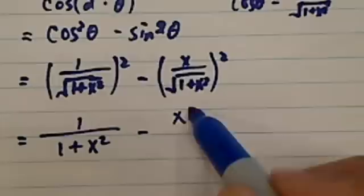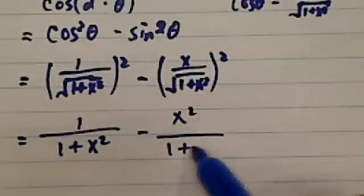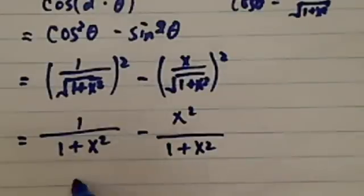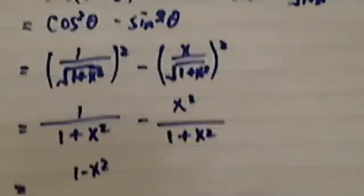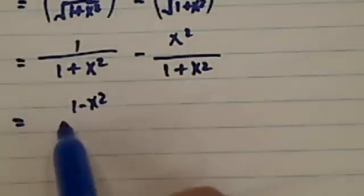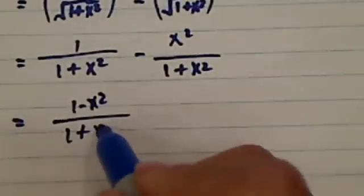And so from here, what we can do is simplify. And there's one more step left for this one. Minus x squared, 1 plus x squared. And the answer is 1 minus x squared. Let me push up a little bit for us. 1 plus x squared.